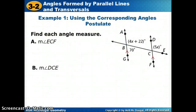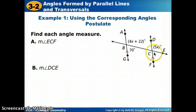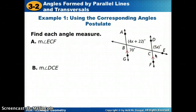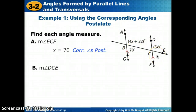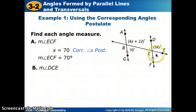Let's use that to try an example. We're looking for angle ECF. If I look at some of the other angles related to it, I have 5X which makes a linear pair, but I don't know what X is. However, I also see I have a corresponding angle that's 70 degrees. So this angle is also going to be 70 degrees — that measure is 70 degrees.